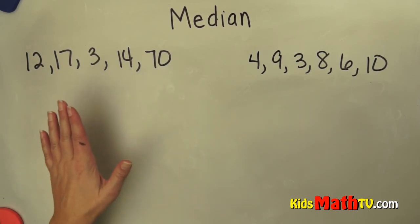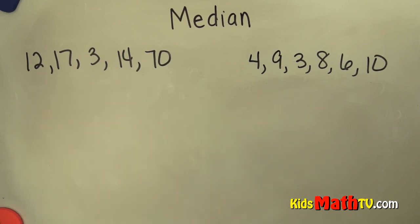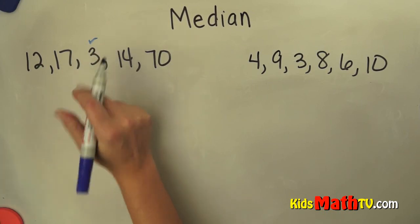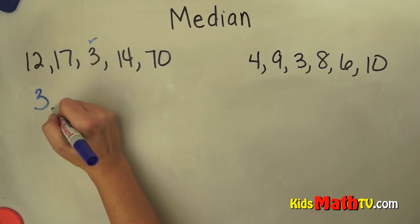So what I need to do is put them in order from least to greatest. I find the smallest number, 3, and I like to check them off as I write them to make sure I don't miss any.